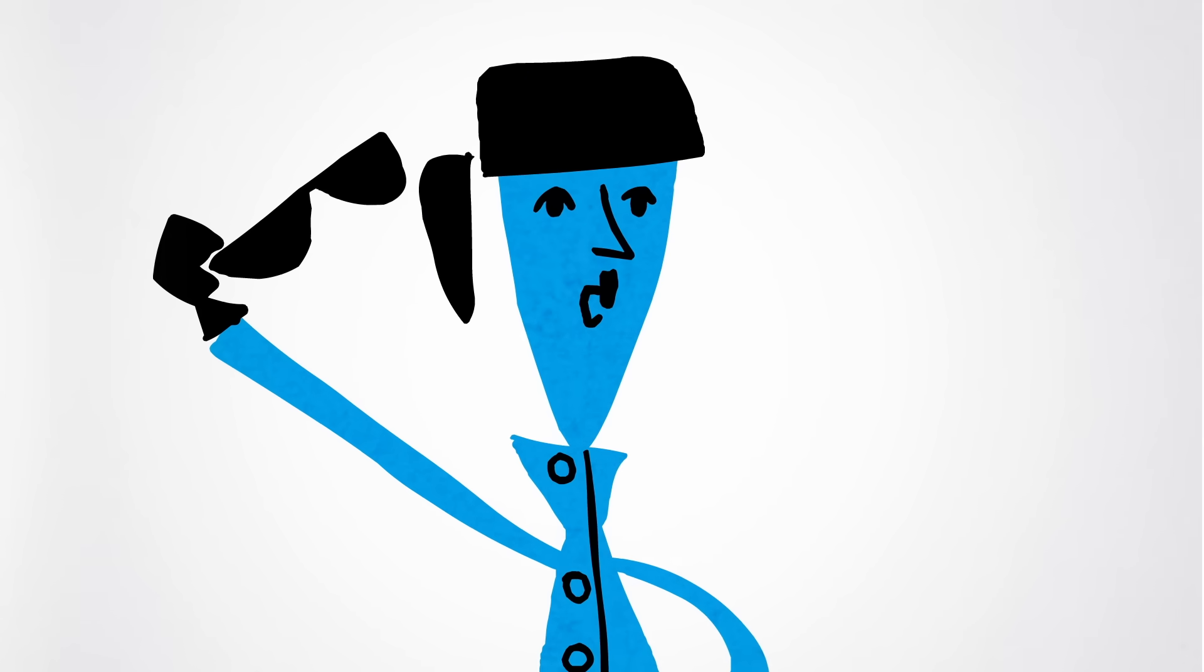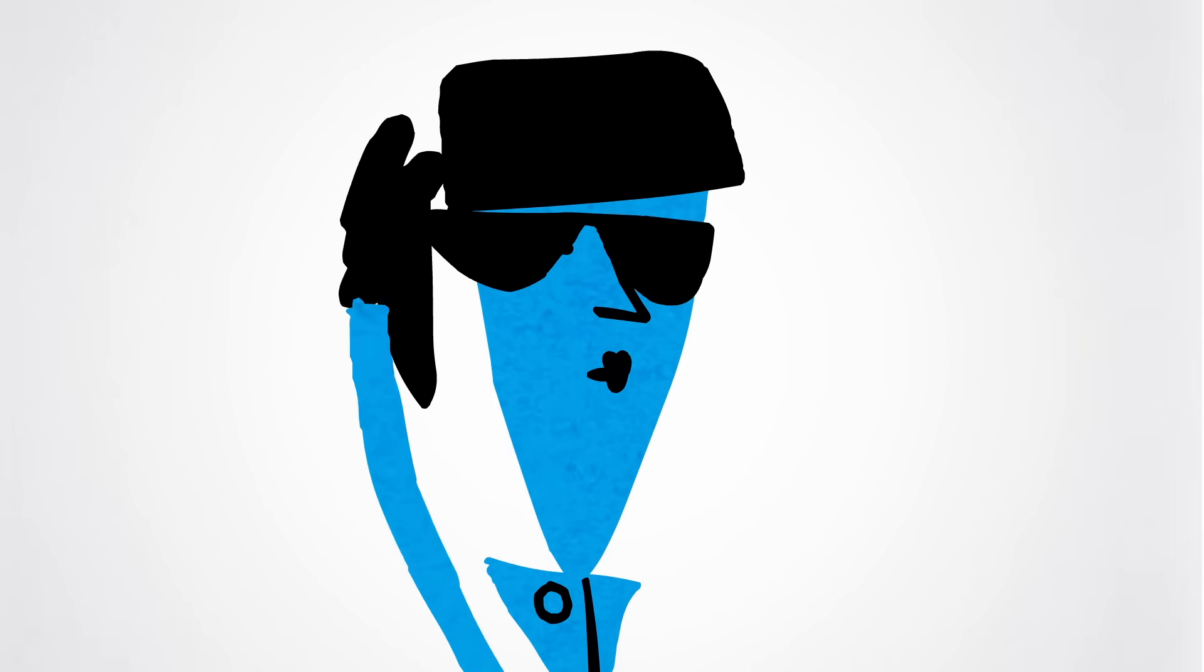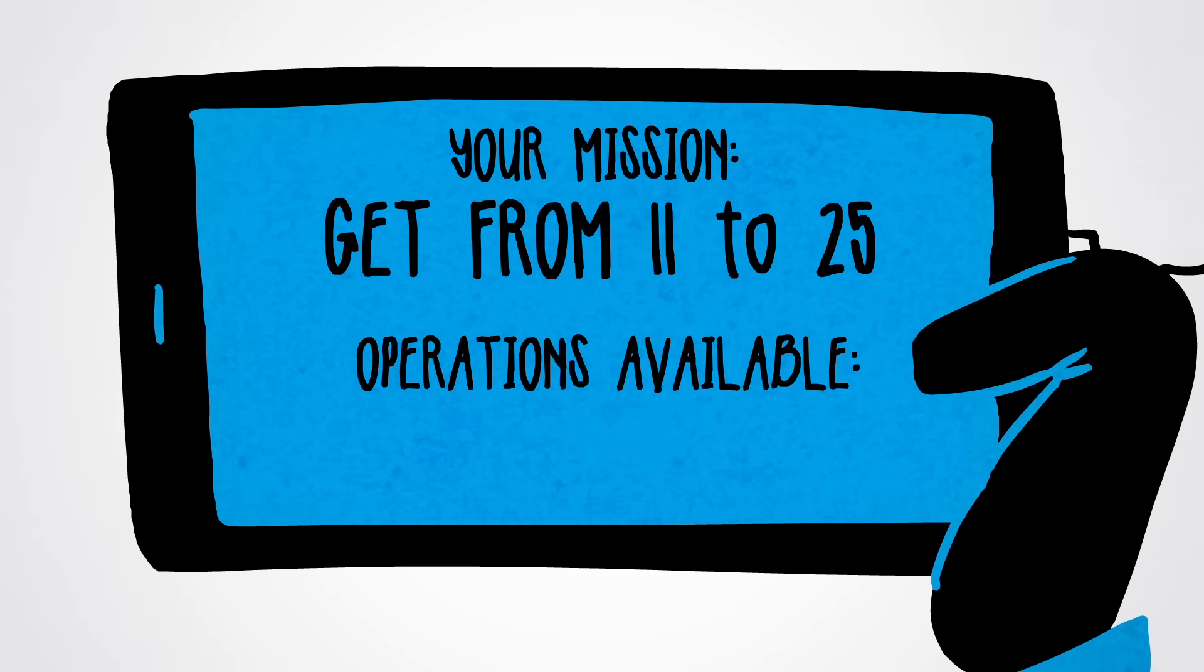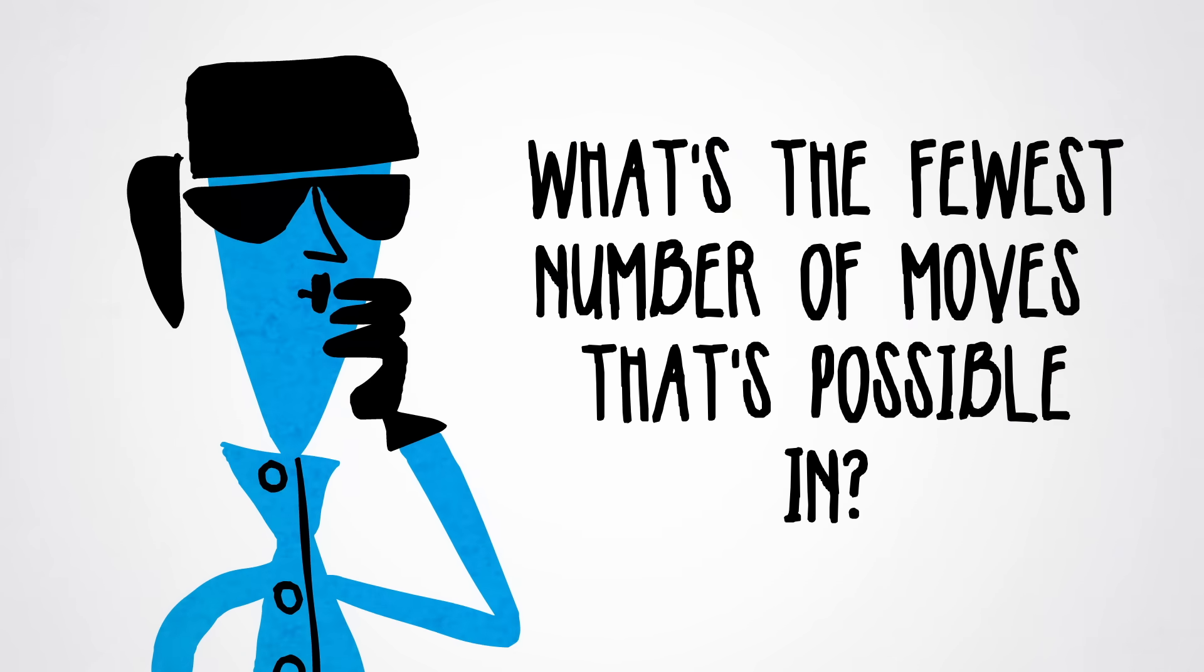Interested in navigating another maze of numbers? Try this one out. You need to get from 11 to 25, and the only operations available are multiplying by 2 or subtracting 3. What's the fewest number of moves that's possible in?